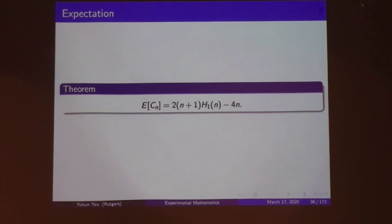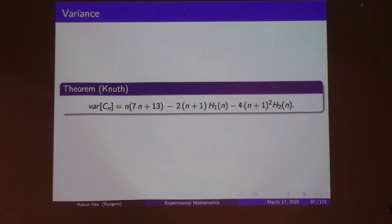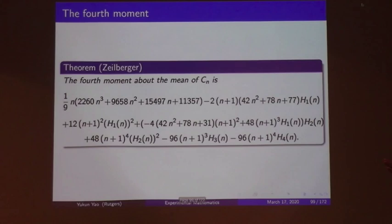Here are the formal moment results for comparisons: the variance, the third moment, and the fourth moment of the number of comparisons in quicksort.